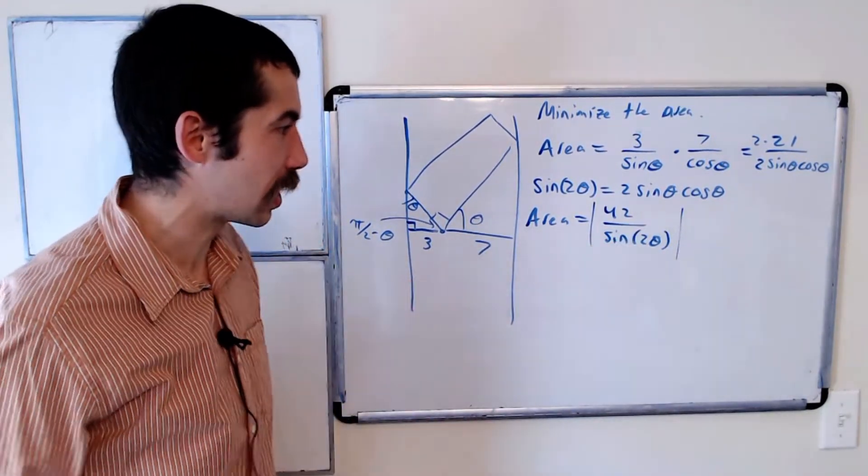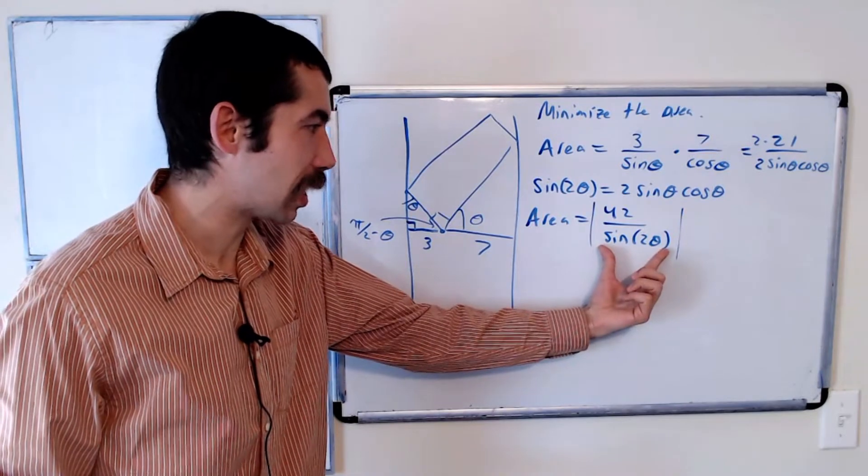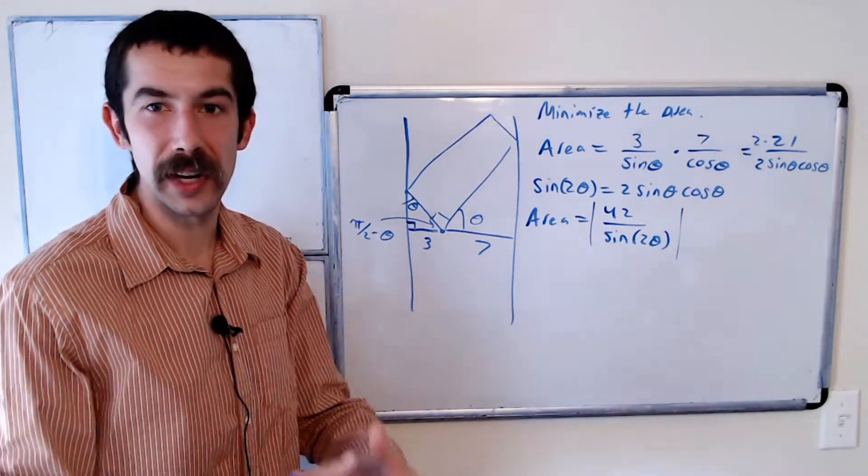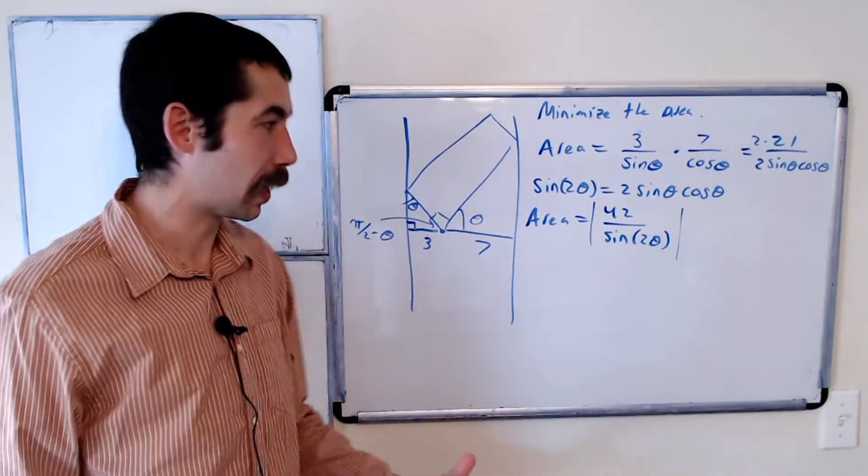Because 42 is a constant. So what's the biggest value that sine of 2 theta could be? Well, the biggest value sine of anything could be is 1.